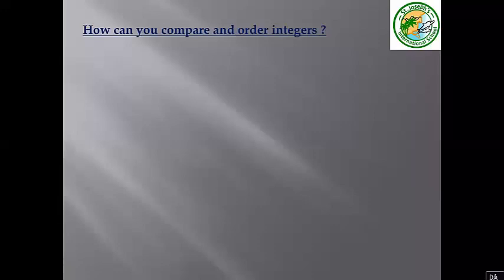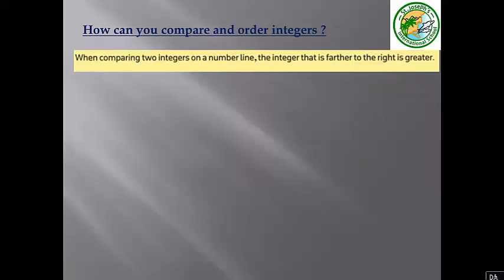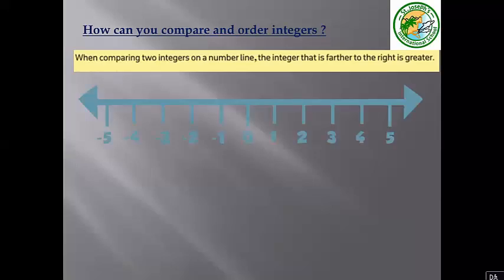How can you compare and order integers? When comparing two integers on a number line, the integer that is farther to the right is greater. For example, on a number line with negative 1 and negative 4, which is bigger? Negative 1, because the integer farther to the right is greater. So negative 1 is bigger than negative 4.